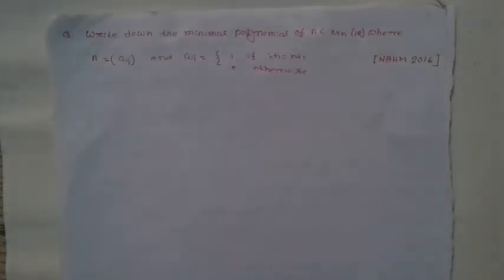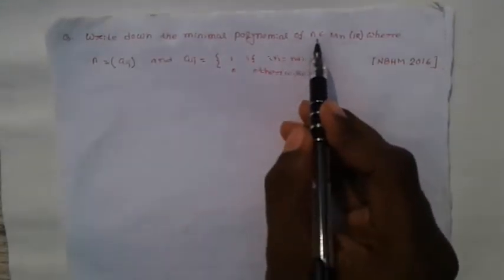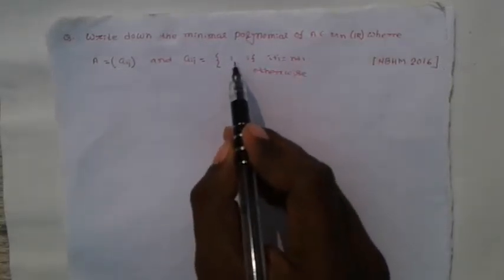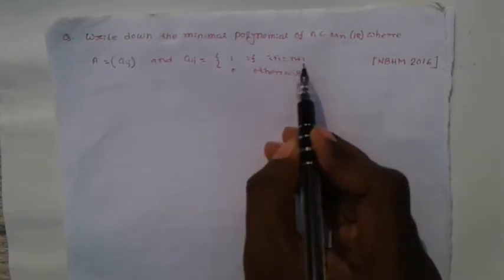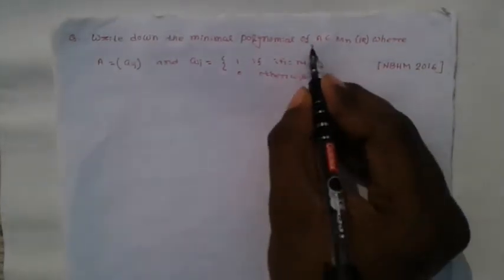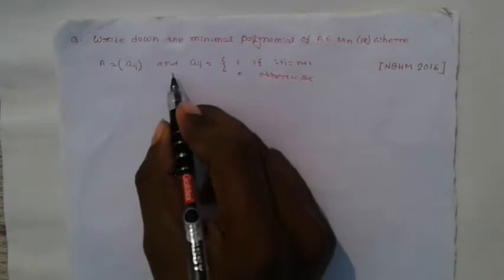Hello friends, welcome to Maths Solution Academy. Now we solve another three problems on algebra in NBGM 2016. The first problem is: write down the minimal polynomial of A, where A is an N×N matrix with entries A_ij equal to 1 if i plus j equals N plus 1, and 0 otherwise. So the question is: what is the minimal polynomial of such a matrix?